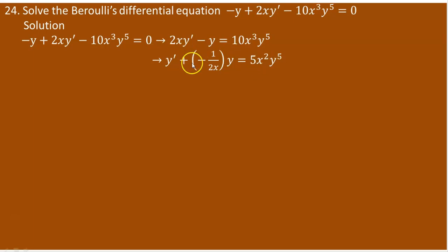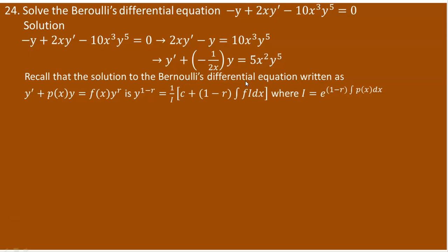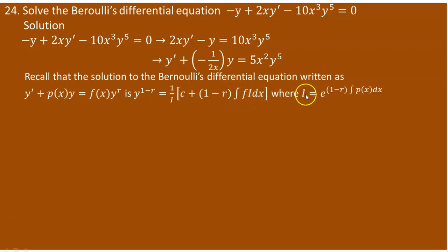This is directly similar to a Bernoulli's equation. The coefficient of y, treated as p(x), is negative 1 over 2x, and f(x) is 5x squared. From the derived formula for a Bernoulli's equation of the kind y prime plus p(x)y equals f(x)y to the power of r, the general solution is y to the power of 1 minus r equals 1 over I times c plus (1 minus r) times the integral of f·I dx, where I is the integrating factor calculated as e to the power of (1 minus r) times the integral of p(x) dx.